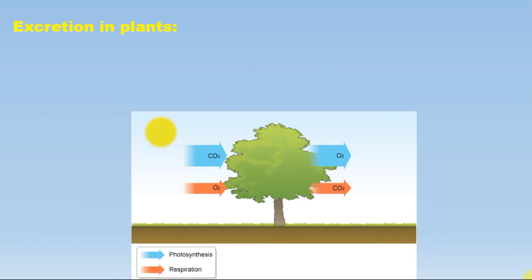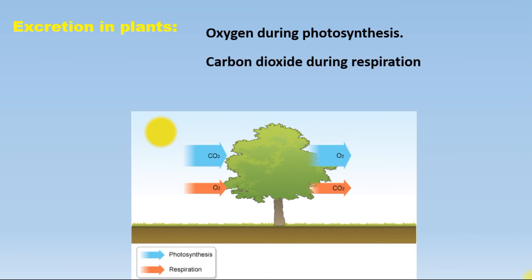But how do plants remove waste? During the daytime, plants take in carbon dioxide and release oxygen during photosynthesis — so here, oxygen is the waste product of plants. At nighttime, during respiration, plants release carbon dioxide and water vapor, and these are the waste products.